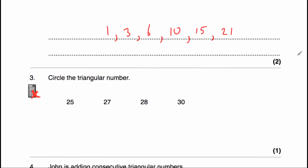Question three says circle the triangular number. We've got 25, 27, 28, and 30. Looking at our triangular numbers — 1, 3, 6, 10, 15, 21 — we added six to get 21, so if we add seven that would be 28. So 28 is the next triangular number, and 28 is the answer.